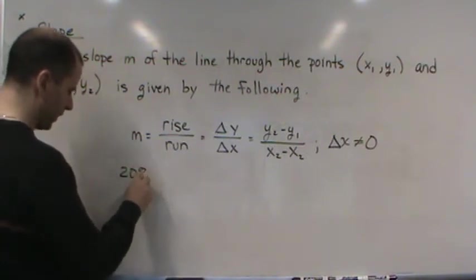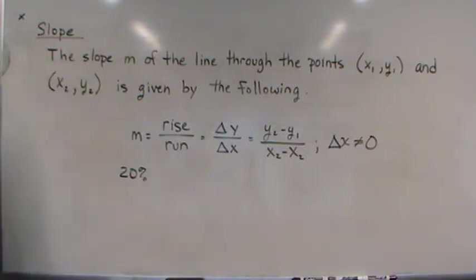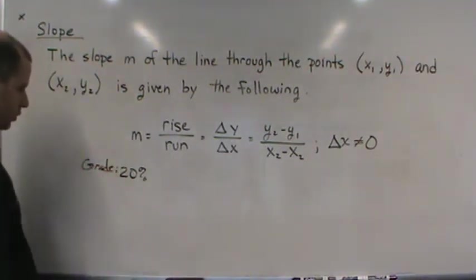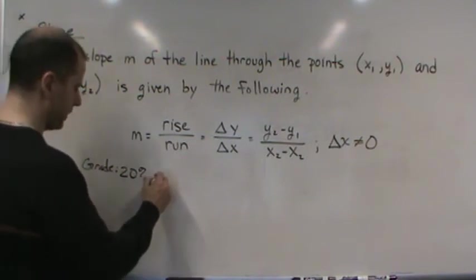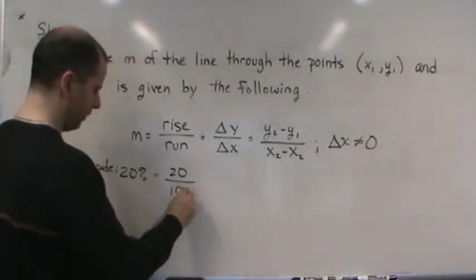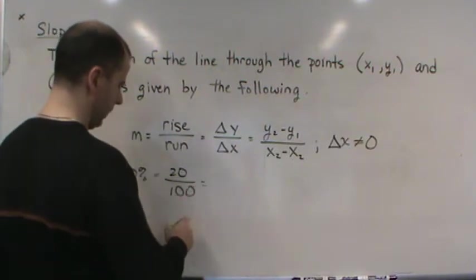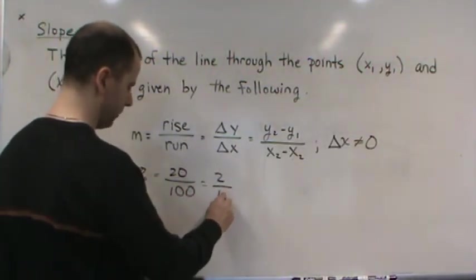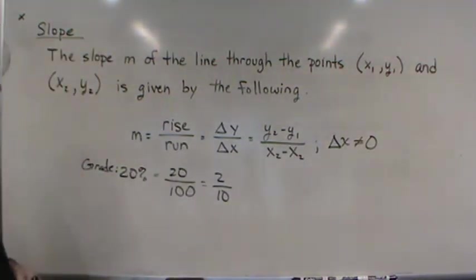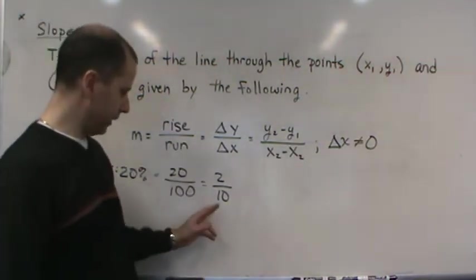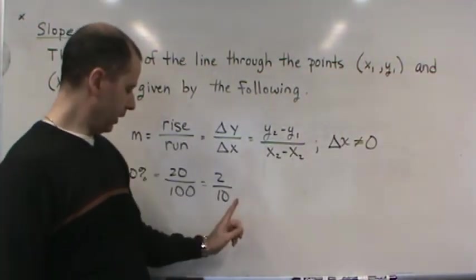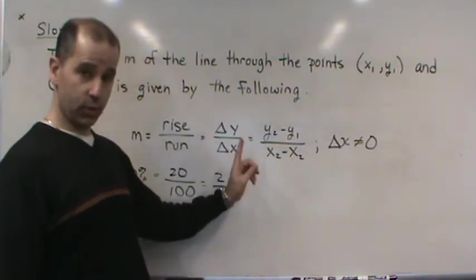If the grade is twenty percent, what they're saying is this is the same as, by definition, twenty over a hundred, or in this case two tenths, two over ten. What they're saying about the highway is that for every ten units that you go horizontal on the highway, the highway is going up two units.